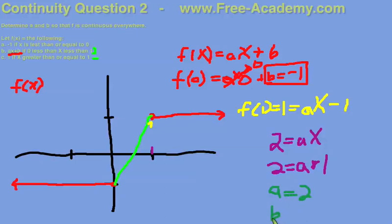So for a equals 2, and b equal to negative 1, we have found a and b, such that f of x is continuous everywhere. Hope this problem was helpful. Keep sending more in to us.